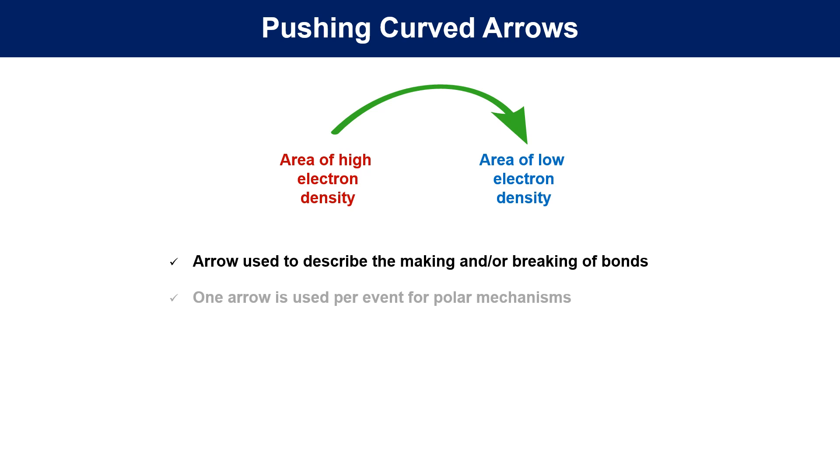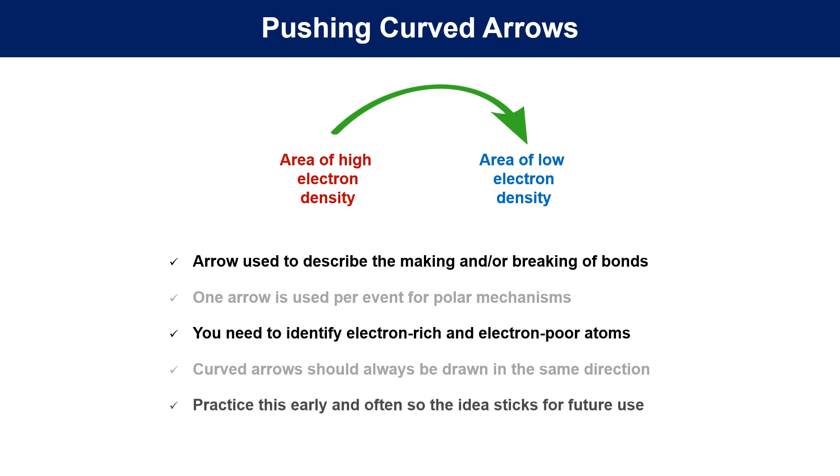In polar mechanisms, one arrow will describe one bond being formed or broken. We use electronegativity values and lone pairs to identify electron-rich areas. Arrows will flow in the same direction as electron density is transferred. The arrows show up in over 100 mechanisms, so getting comfortable with their use early is important.